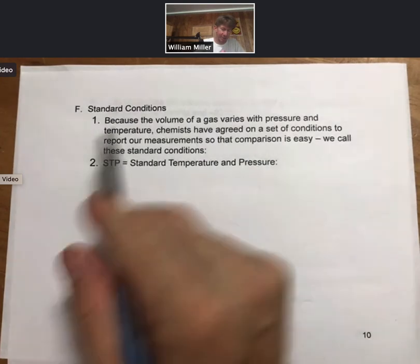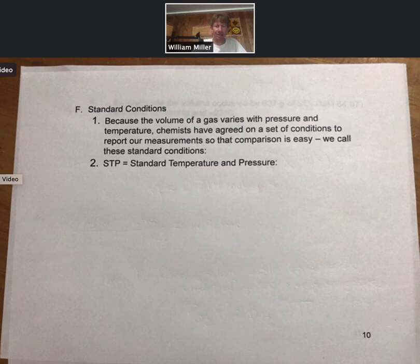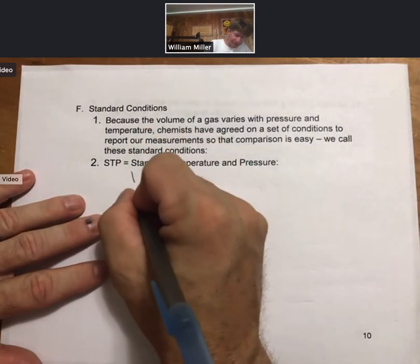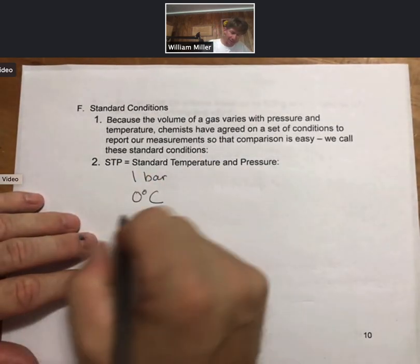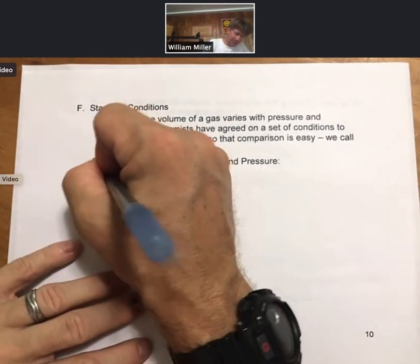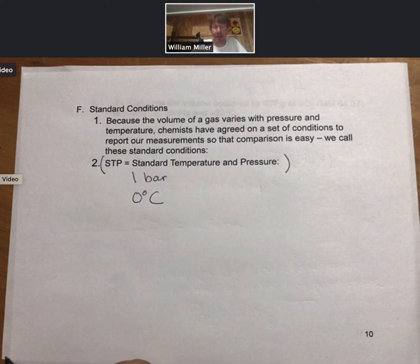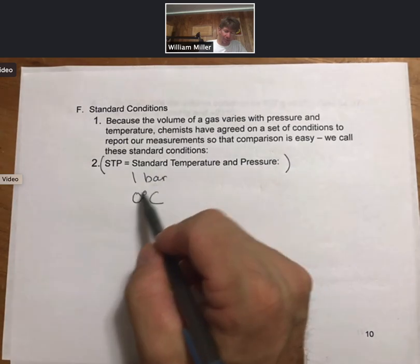Now a couple words here. So standard conditions. Because the volume of gas varies with pressure and temperature, chemists have agreed on a set of conditions to report our measurements so the comparison is easy. We call these standard conditions. So STP is standard temperature and pressure, those are one bar and zero degrees Celsius. So if you see a problem, and I'll put these in parentheses, and parentheses mean that I will not ask you to memorize this for the exam and for any quizzes, but it is useful because you will see it on the homework where it just says what is the pressure of this gas at STP. And you can come look at your notes or you can Google it. STP is one bar, zero degrees Celsius.